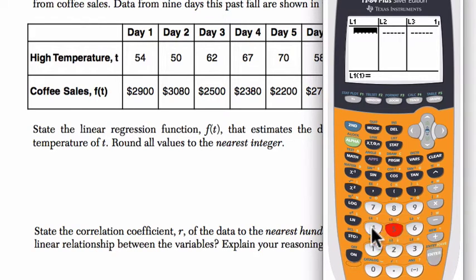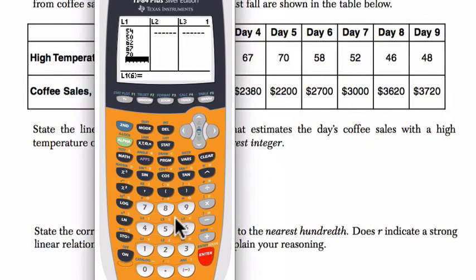So x is 54, then 50, then 62. Go slowly here. Don't let them trip you up. Just enter these numbers in one at a time. I always make mistakes here. 70, and then 58, just enter those values in, 52, 46, and 48.